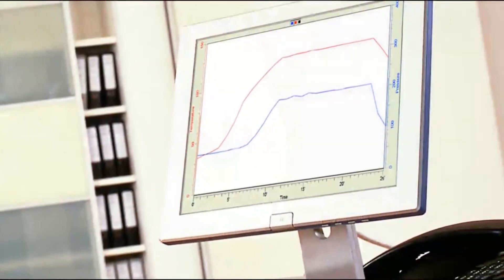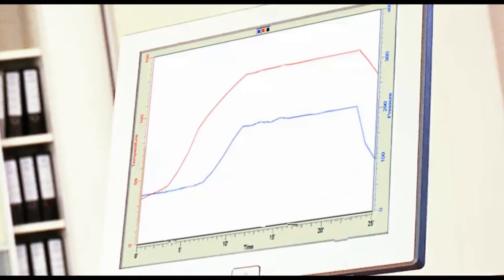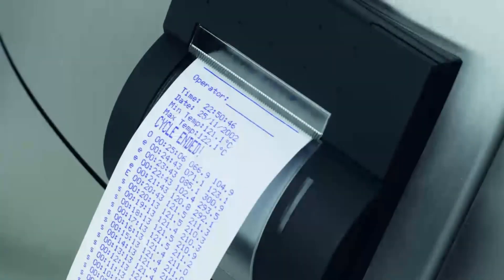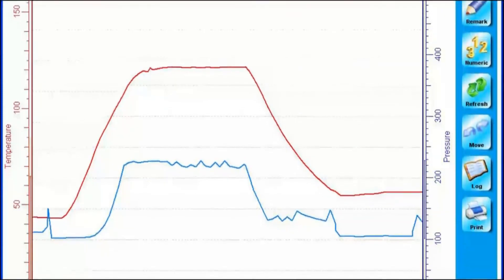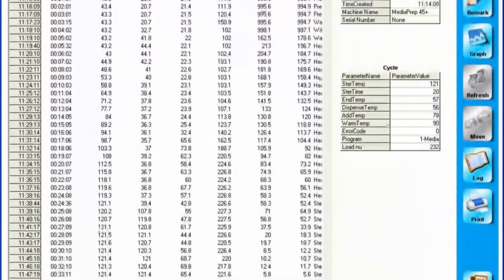For quality control and documentation purposes, cycle information can be recorded via ticket printer or via PC. Information on temperature, time, and pressure can be stored with each cycle run. This information can be displayed in either graphical or numerical formats.